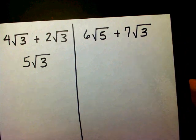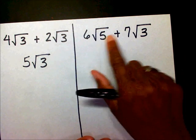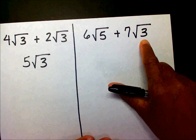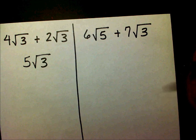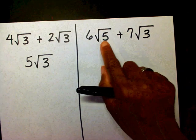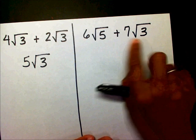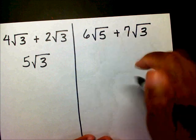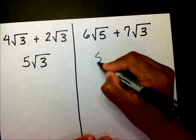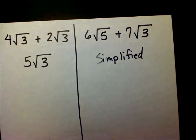So now the first thing you want to do is make sure that your radicals are simplified. I have a radical five — that's as simple as it can get. I have a radical three — that is as simple as it can get. Now I want to check to make sure my radicands are the same. I have a radical of five and a radical of three. Since these two radicands are not the same, it's already simplified. I can't do anything else to it — this is my answer.